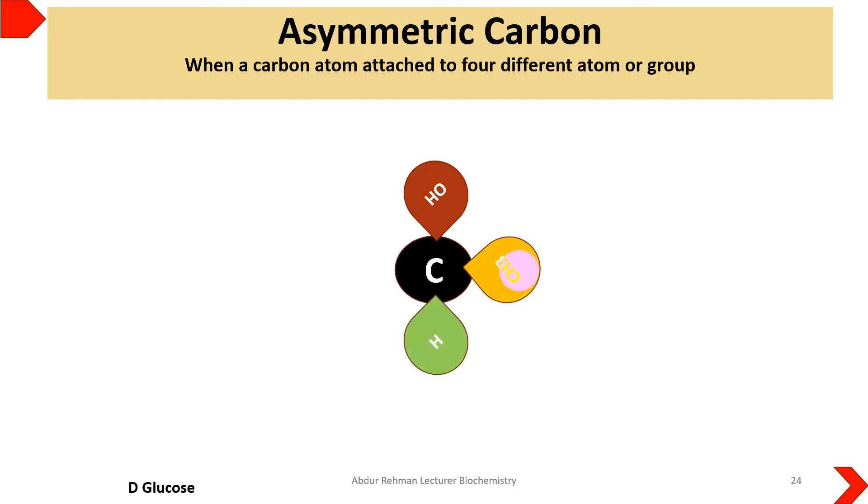Asymmetric carbon is the one which is attached to four different atoms or groups, while symmetric carbon is bonded to at least two same groups or atoms.